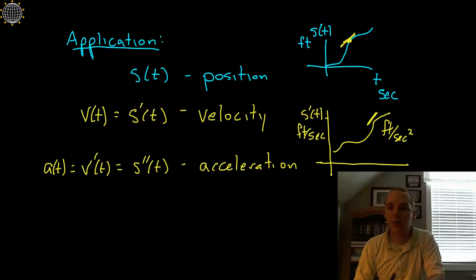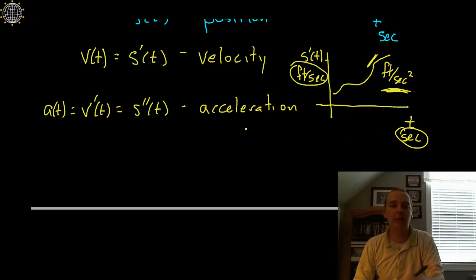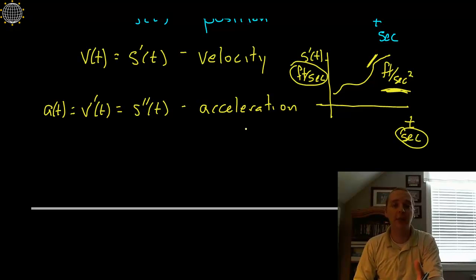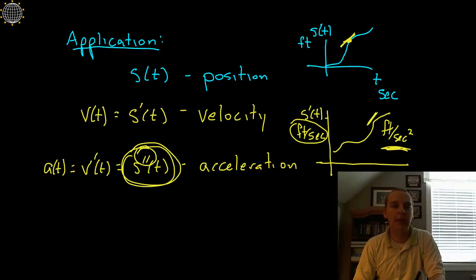In case that's hidden behind my picture-in-picture, let me scroll down a little. So you can see: feet per second per second — that's feet per second squared — that's acceleration. For instance, the acceleration due to gravity is negative 32 feet per second squared, or negative 9.8 meters per second squared, depending on the unit. So that's just one little taste of an application for where you might see higher order derivatives.